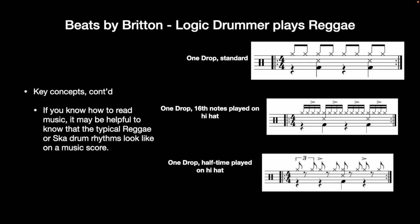You don't really need to know how to read sheet music. But if you do, it may be helpful to know that typical reggae or ska drum rhythms look like this on the page. A typical reggae rhythm is called a one-drop, which is very common in reggae — it's what you hear in songs like Three Little Birds and most of Bob Marley's tunes. Most of Bob Marley's tunes seem to be one-drop with 16th notes played on the hi-hat. Knowing sheet music helps as a visual representation, but it's not required.